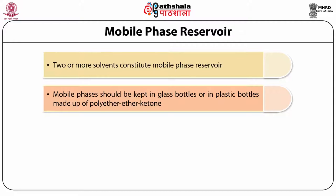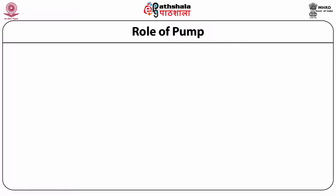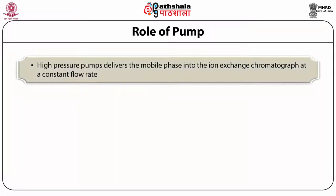For degassing, the solvents are vacuum treated for approximately five minutes followed by helium purging. Then, these solvents are kept under helium atmosphere. After discussing about the mobile phase reservoir, let me tell you about the role of the high pressure pump used in Ion Exchange Chromatography. The high pressure pump delivers the mobile phase into the Ion Exchange chromatograph at a constant flow rate.